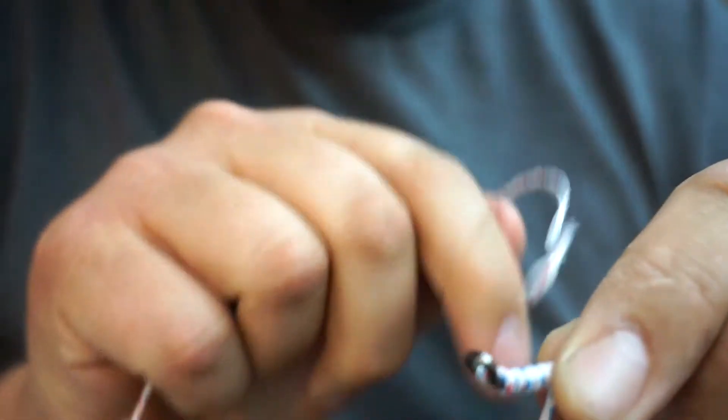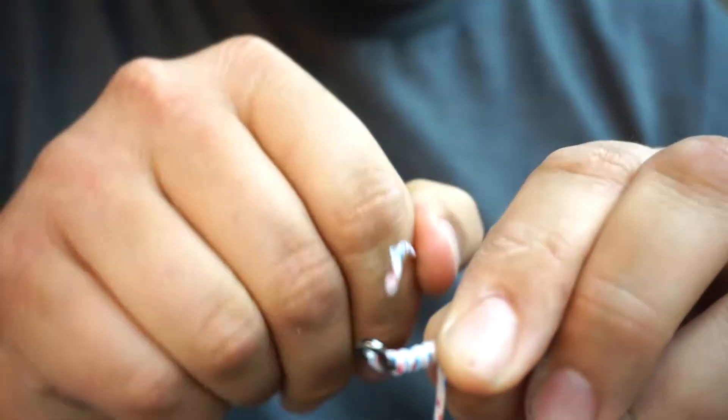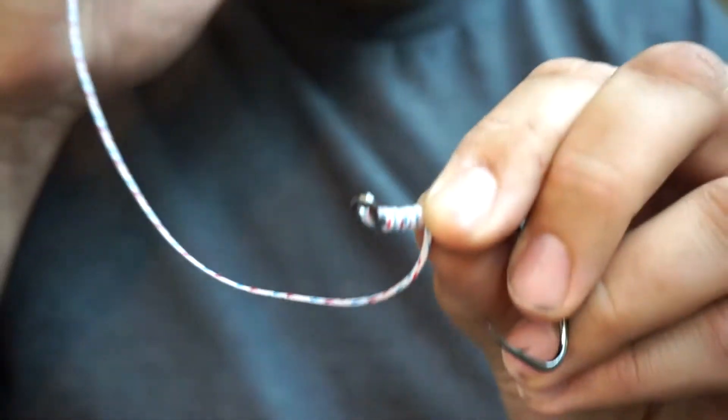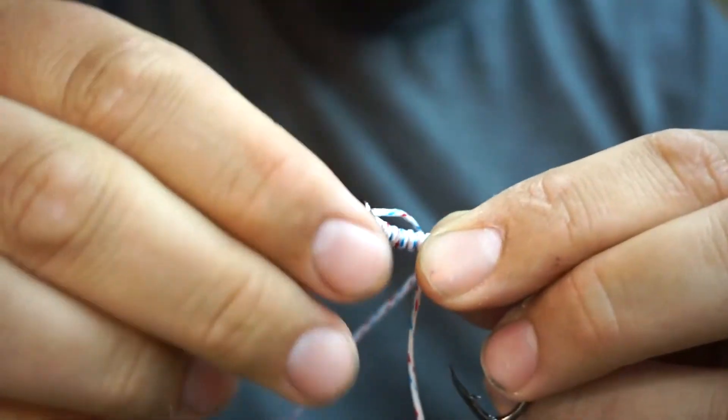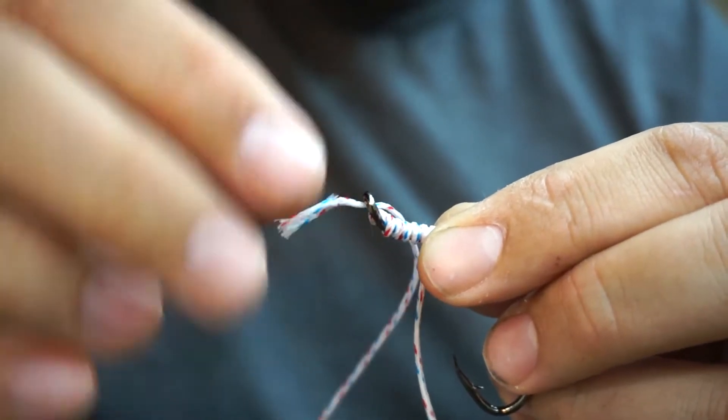Take your other tag end. Put through the eye of your hook. About an inch or so.